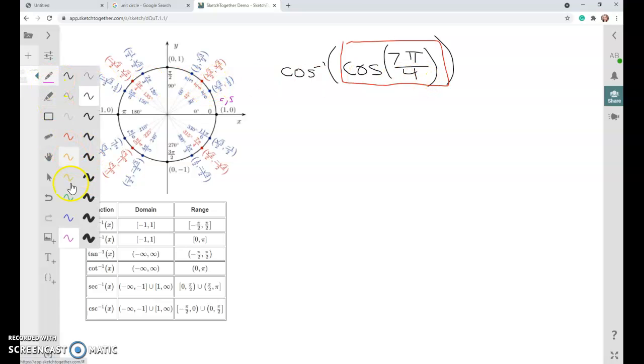We are finding the cosine of 7π over 4. So we're going to go find 7π over 4 on our chart, and cosine is the first part of the coordinate there. So this whole thing on the inside of inverse cosine is square root of 2 over 2. That was the value for cosine of 7π over 4.